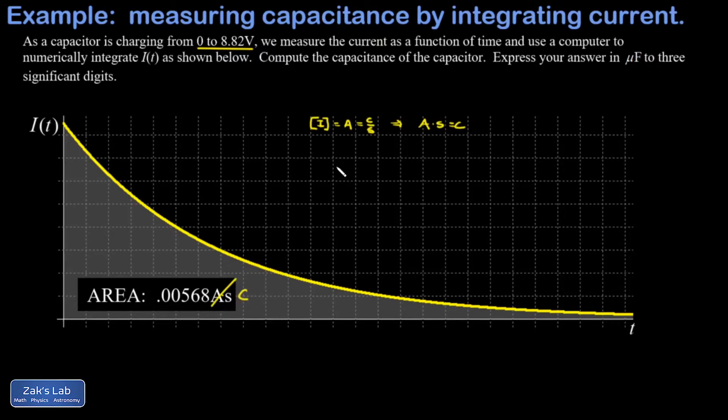There's not much to do in this problem. I have the total charge that flowed onto the capacitor, 0.00568 coulombs, and I have the final voltage across the terminals of the capacitor, 8.82 volts. That allows me to find the capacitance - that's the charge per volt.